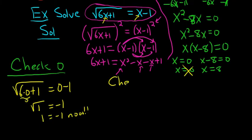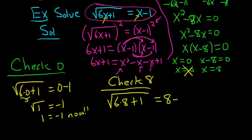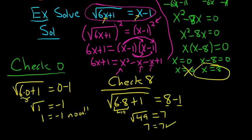Let's go ahead and check 8. Square root of 6 times 8 plus 1, that should be equal to 8 minus 1. So 6 times 8 is 48, and 48 plus 1 is 49. So square root of 49 is equal to 8 minus 1, which is 7. So 7 is equal to 7. We got it! So the answer in this case is 8.